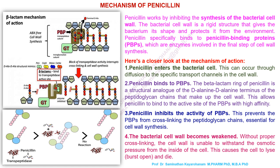Penicillin binds to PBPs. The beta-lactam ring of penicillin is a structural analogue of the D-alanine-D-alanine terminus of the peptidoglycan chains that make up the cell wall. This allows penicillin to bind to the active site of the PBPs with high affinity.